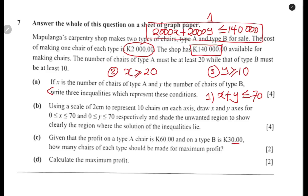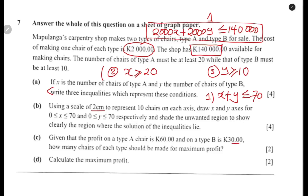Now for question B: using a scale of two centimeters to represent 10 units on each axis, you're going to plot on the graph. Each big box of two centimeters represents 10 chairs, so you move in 10s: 10, 20, 30, 40, 50, 60, up to 70 on the X axis. On the Y axis, similarly from 0 to 70. The question asks you to shade the unwanted region and clearly show where the solution of inequalities lies.